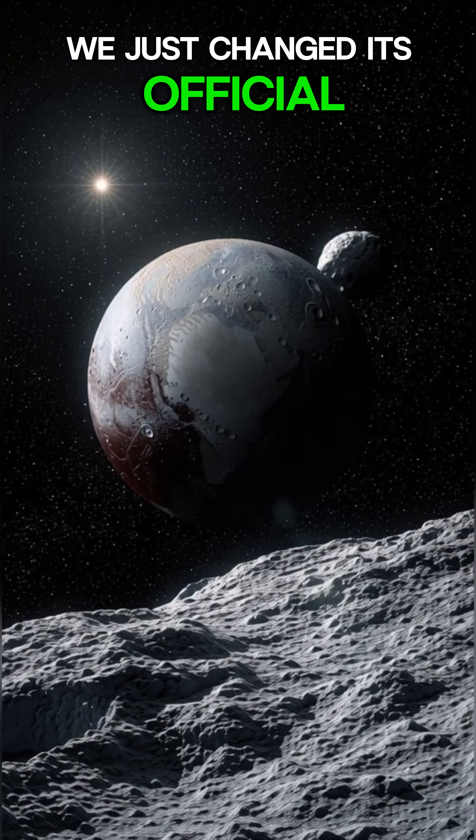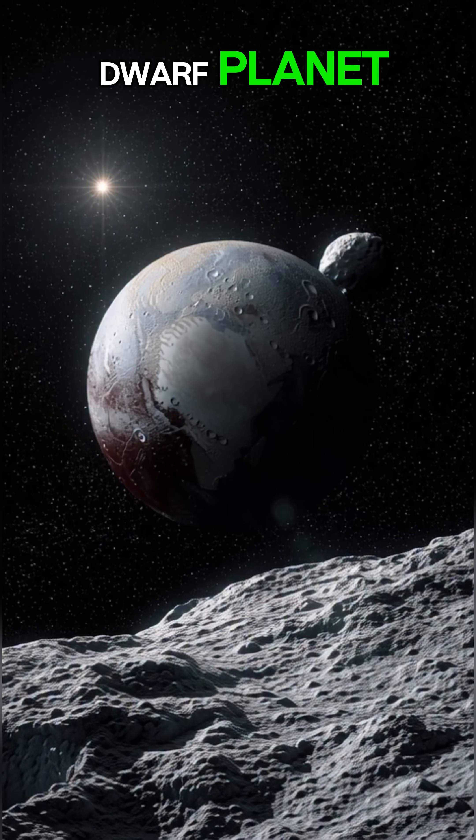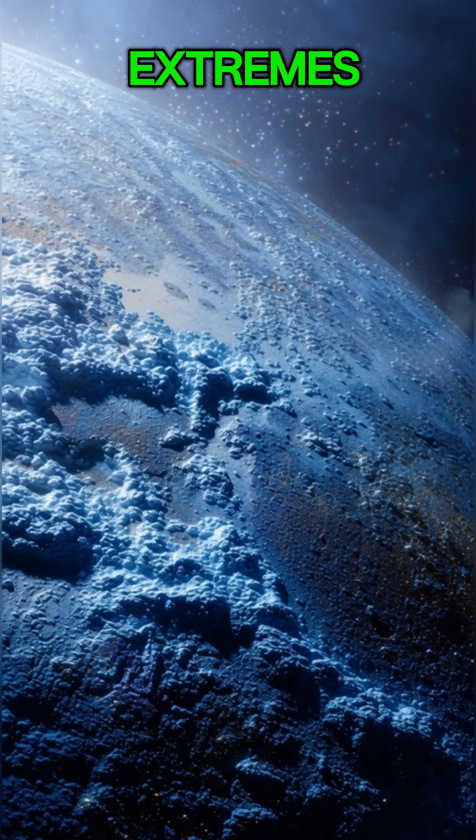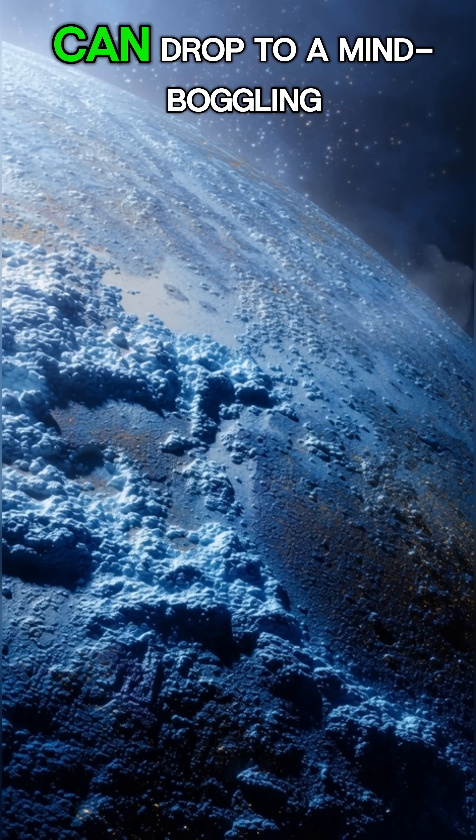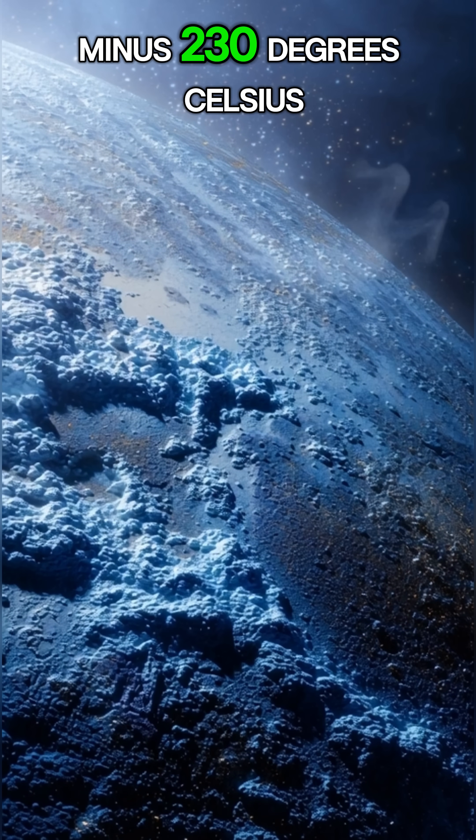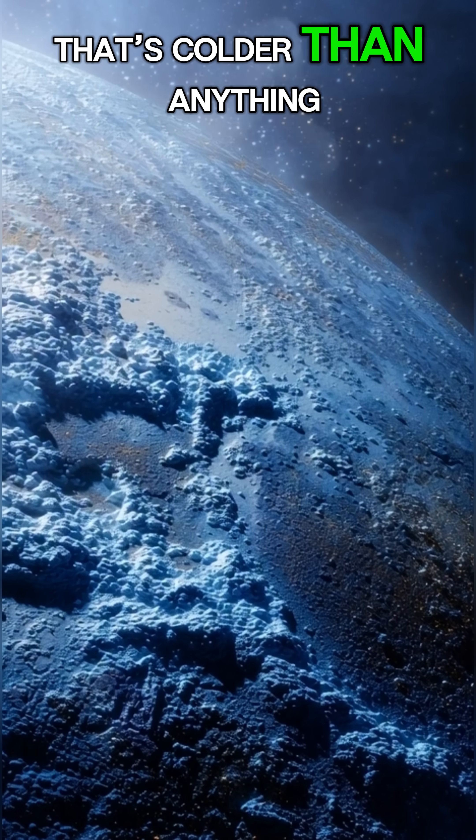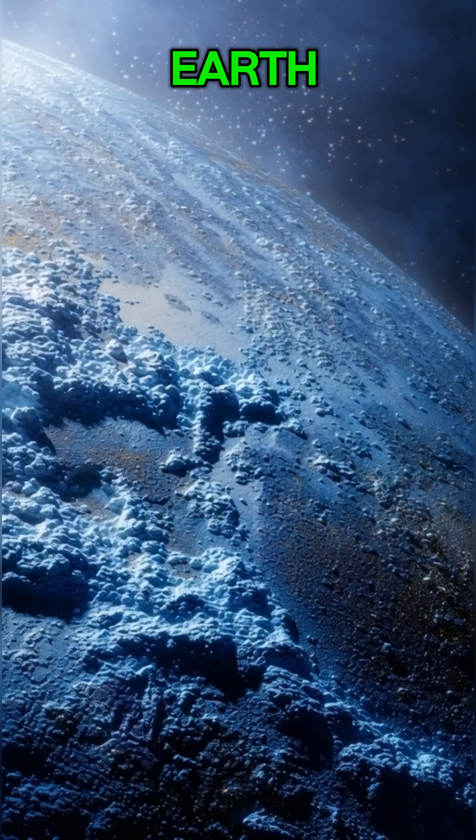We just changed its official title to a dwarf planet. And it's a world of extremes. The temperature on Pluto can drop to a mind-boggling minus 230 degrees Celsius. That's colder than anything you could ever imagine on Earth.